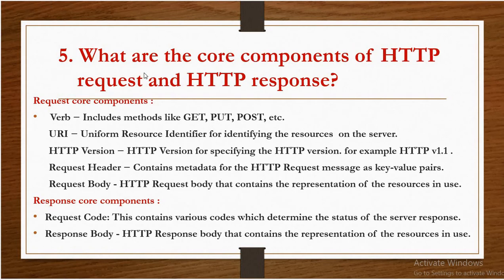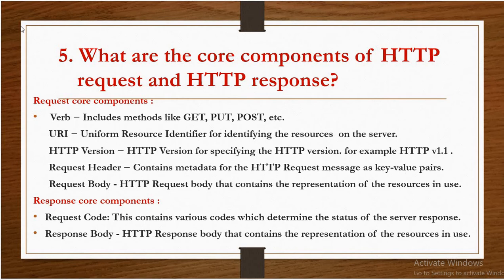The next question is: what are the core components of HTTP request and HTTP response? HTTP request core components: first is Verb — it includes methods like GET, PUT, POST, etc. Second is URI — Uniform Resource Identifier — for identifying the resources on the server. Third is HTTP version, for specifying the HTTP version, for example HTTP version 1.1. Fourth is Request Header — it contains metadata for the HTTP request message as key-value pairs. Fifth is Request Body — the HTTP request body that contains the representation of the resources in use.